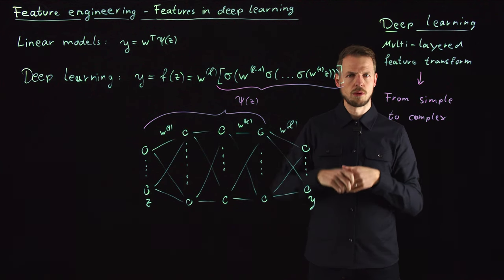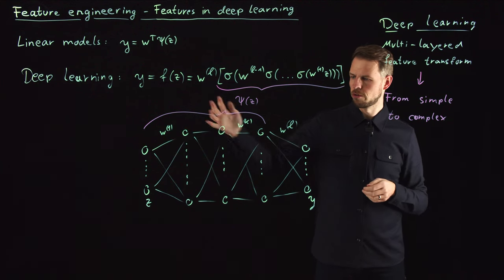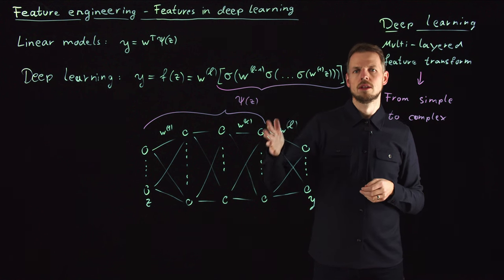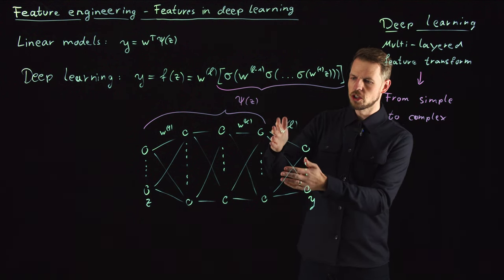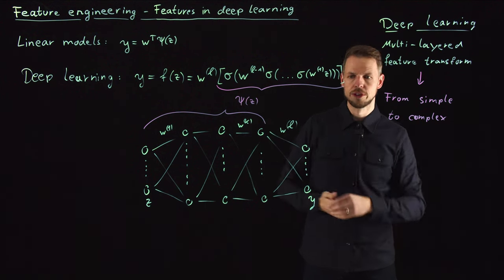Basically this multi-layered feature vector can represent any transform from the input to some feature representation that allows for a linear prediction in the last layer.